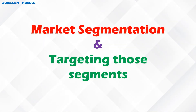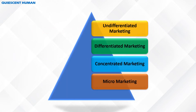Hi folks, my name is Aditya and I welcome you all to the Quiescent Human channel. Today we will be understanding a few things about market segmentation and how different companies target within it. The four main types are: undifferentiated marketing, differentiated marketing, concentrated marketing, and micro marketing.